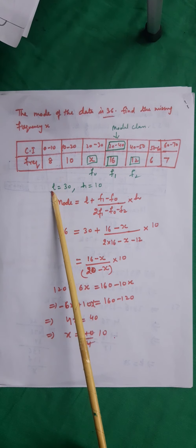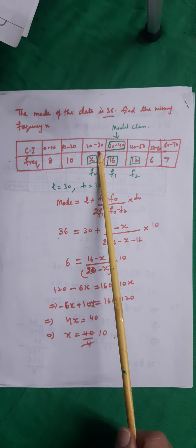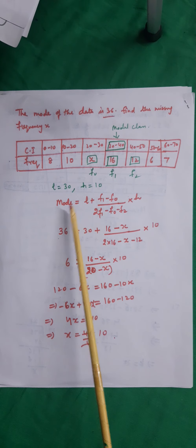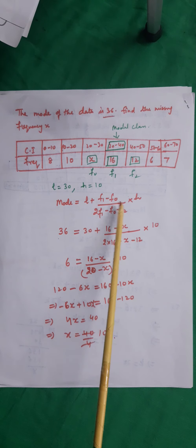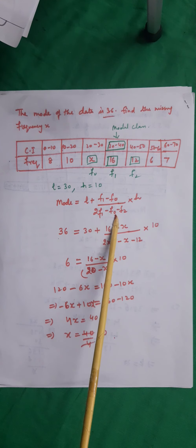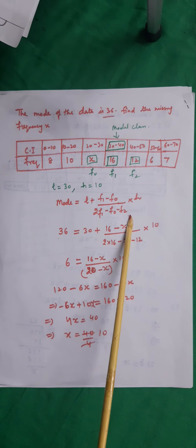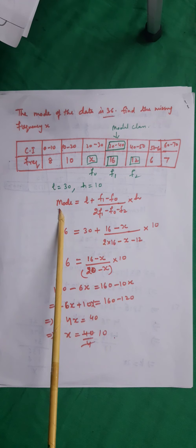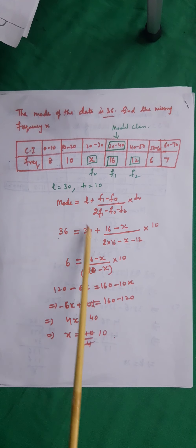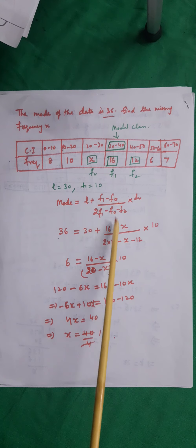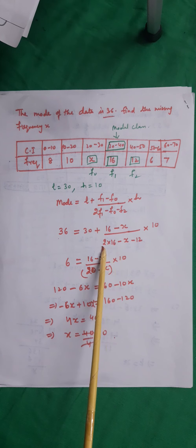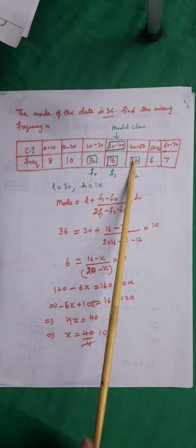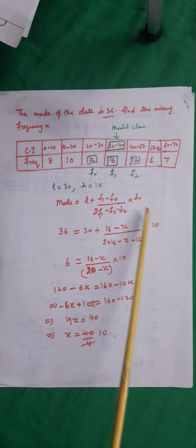L is the lower limit of the modal class, and H is the class size. Now we know mode equals L plus (F1 minus F0) upon (2F1 minus F0 minus F2) into H. Substituting: mode is 36, L is 30, F1 is 16, F0 is X, H is 10.